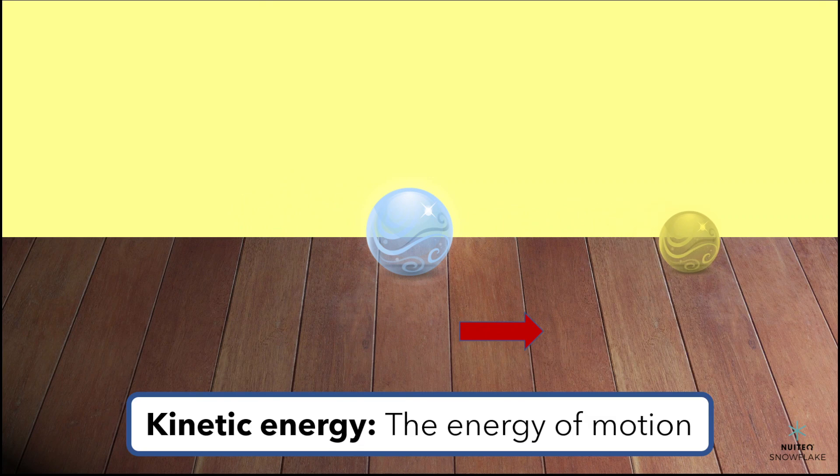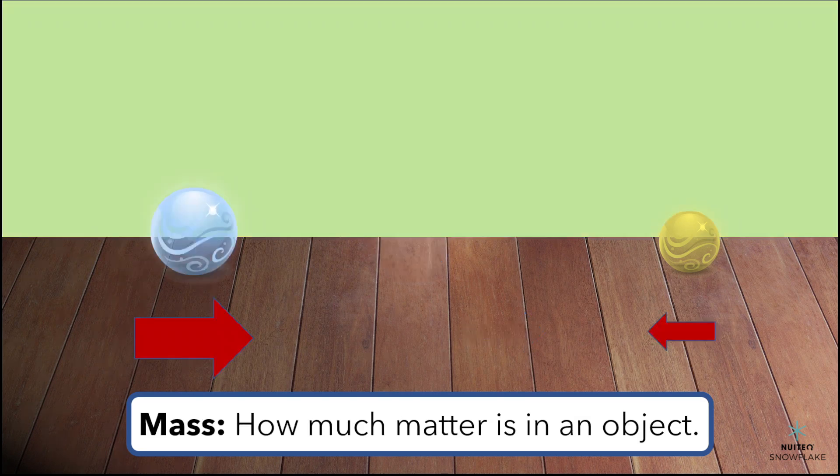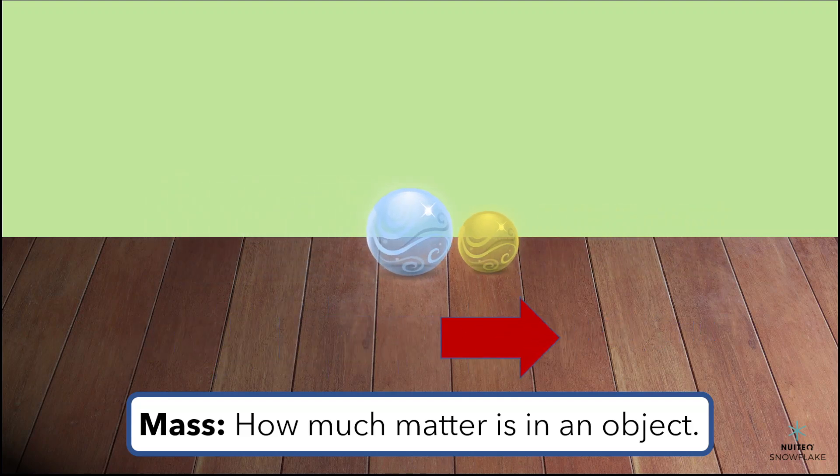But what about mass? Mass is how much matter is in an object. The big marble has more mass than the small marble, so it takes more energy to get it moving.